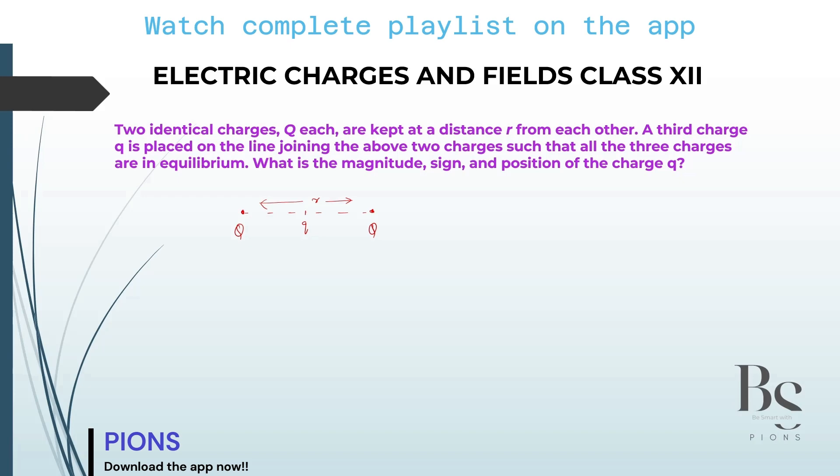Let's assume that small q is placed at D. If this is D, this will be how much? R minus D.